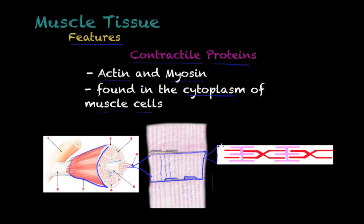Under an electron microscope you will see a structure called a sarcomere, formed by actin and myosin. The red here represents myosin and the pink represents actin filaments. When these fibers or proteins move along one another, they cause contraction.